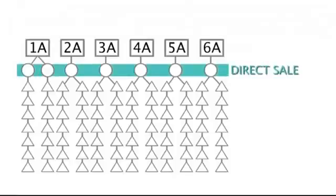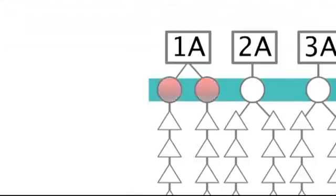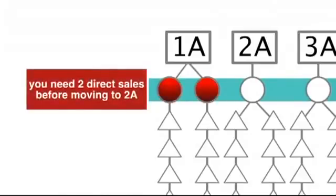The first sale in each rank must be a direct sale. The only exception occurs when you are a 1A distributor, where it is required to sell two units through direct sales to move to the 2A rank.